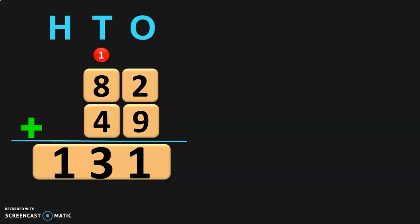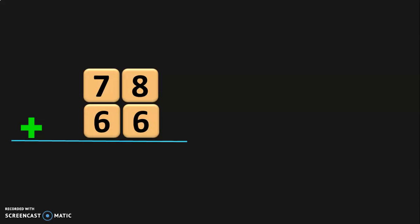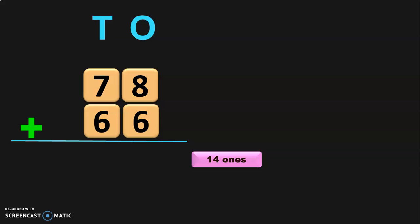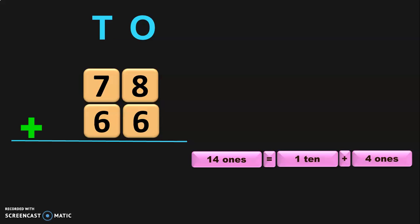Hope it is clear so far. Let us move on to another example: 78 plus 66. Write down the place values — 1's place and 10's place. Now, add the digits in the 1's place. 8 plus 6 will give you 14. So, you have 14 1's. 14 1's can be regrouped as 1 ten plus 4 1's. So, retain the 4 1's in the 1's place and carry over the 1 ten to the digits in the 10's place.